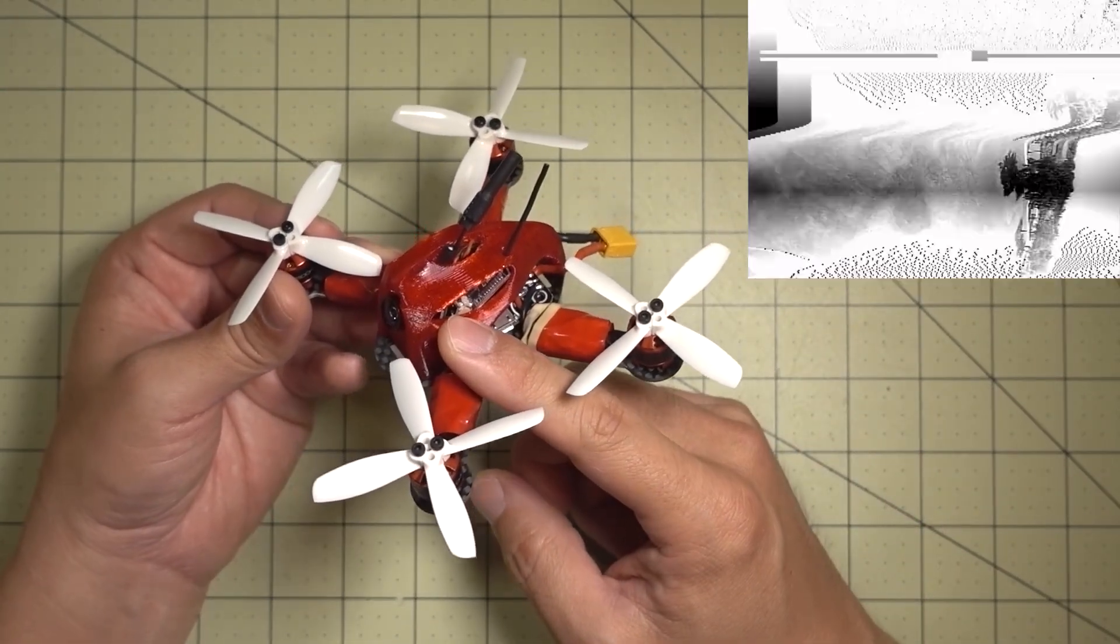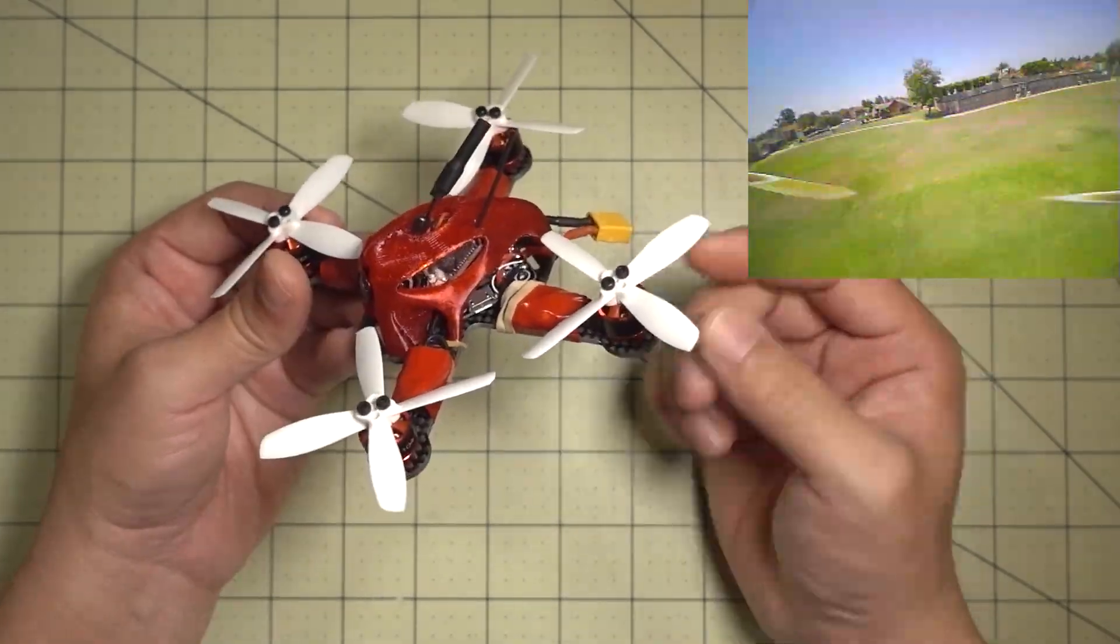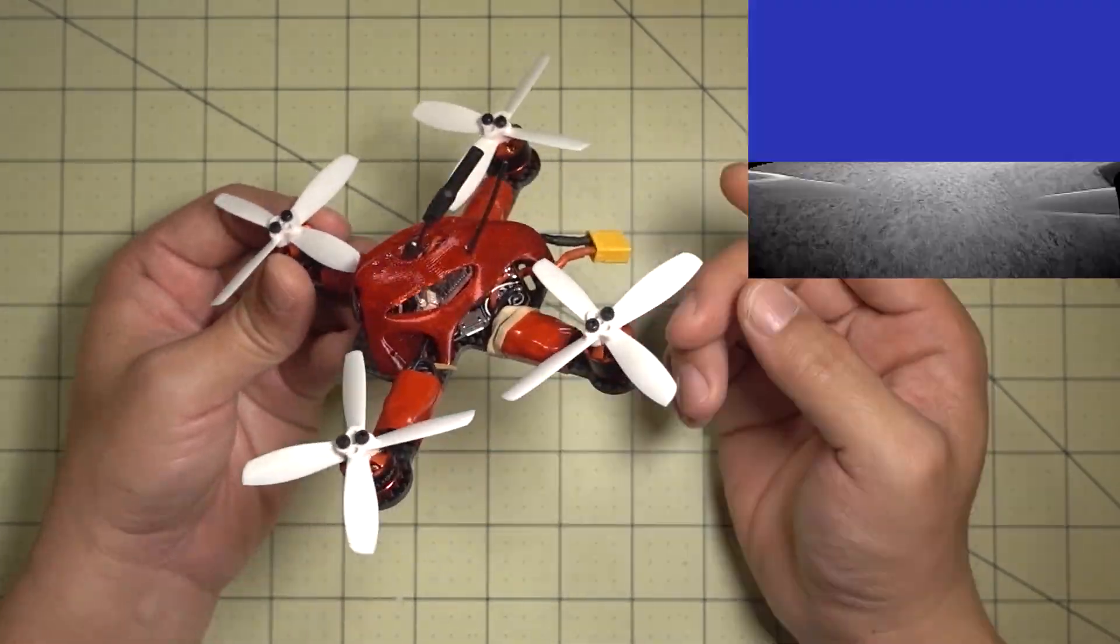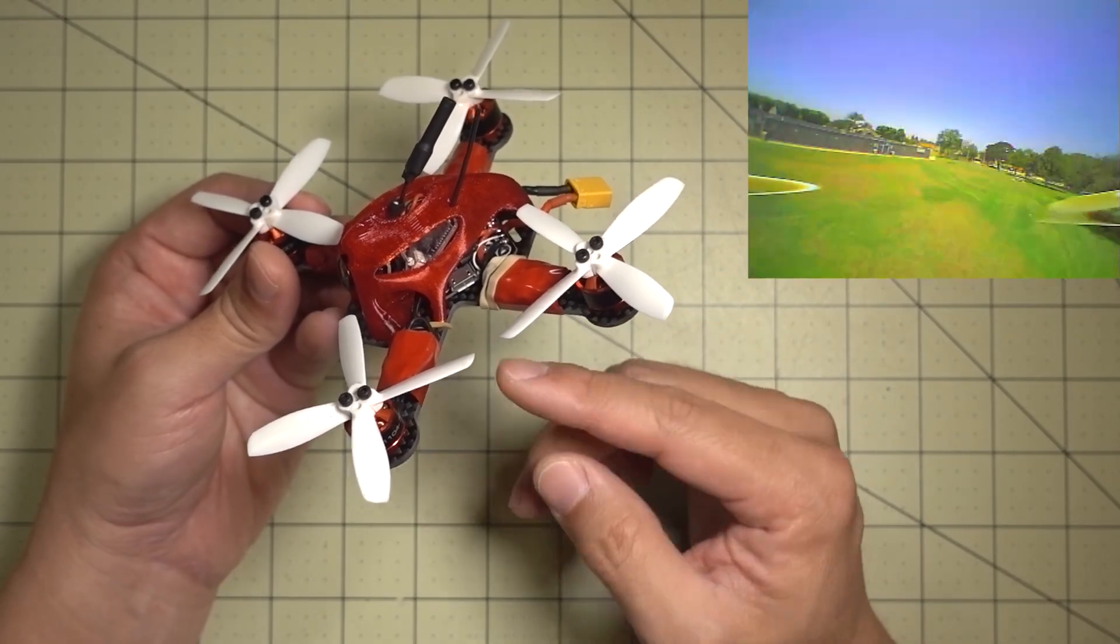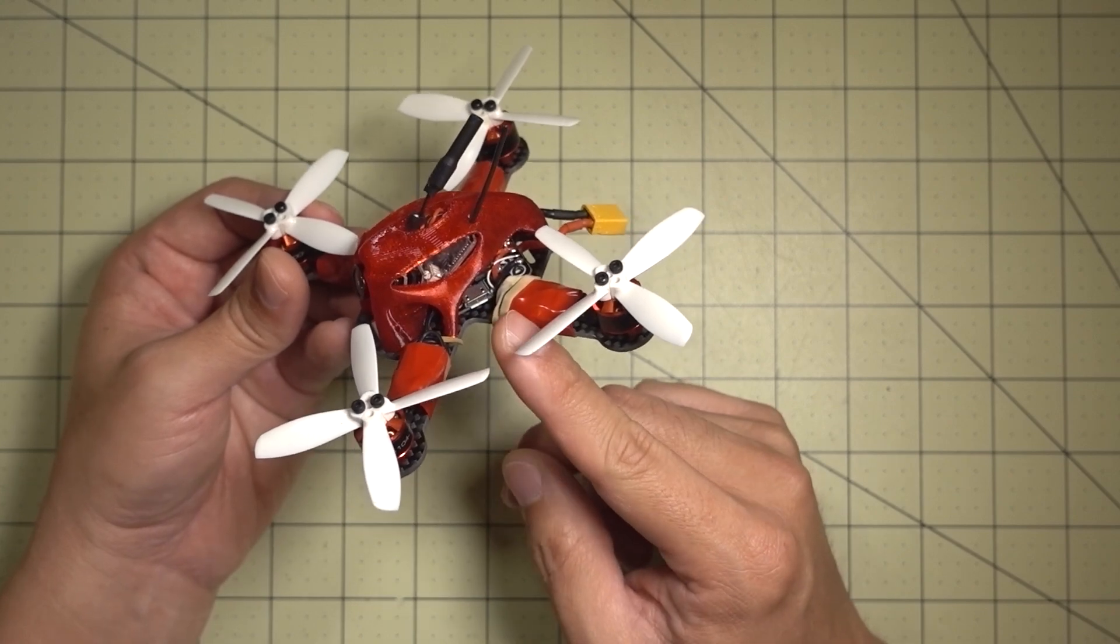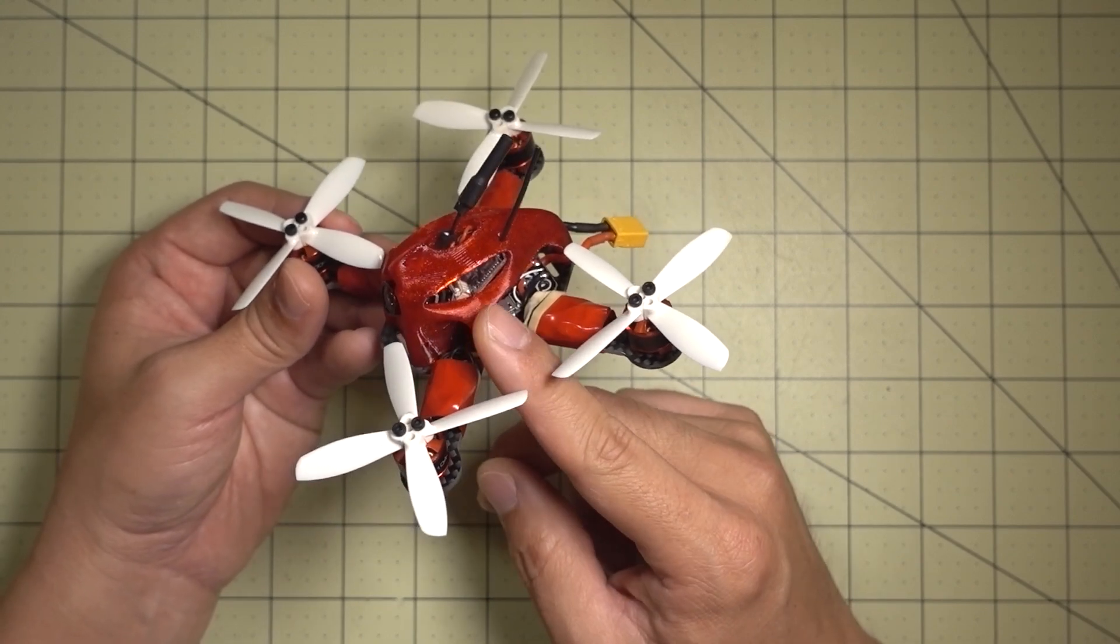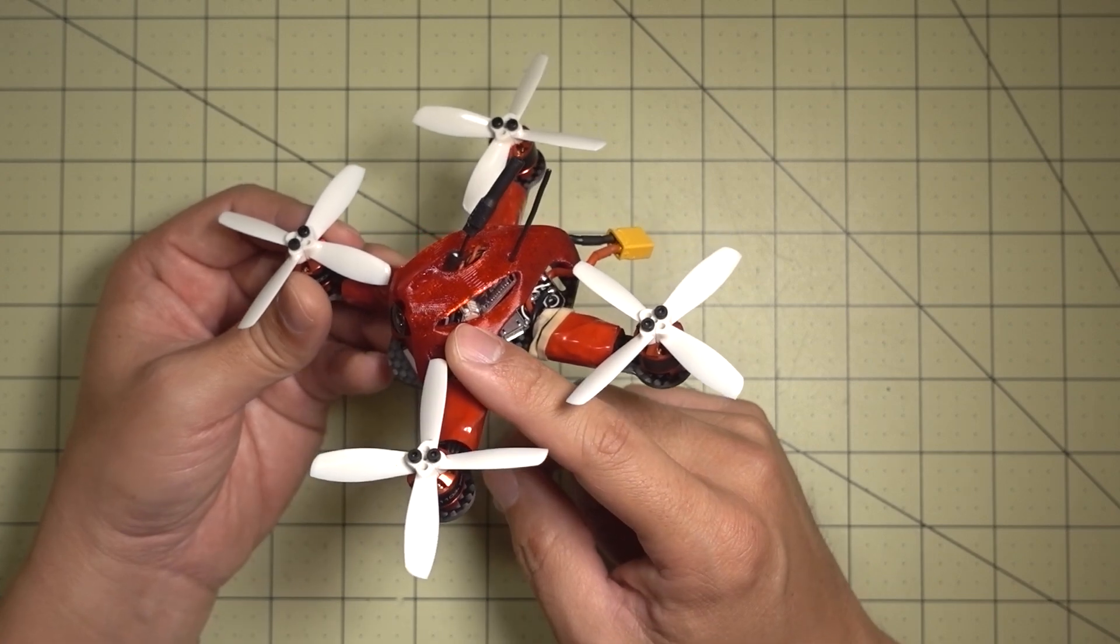Basically the video just cuts out when you do a punch out. What happens is power is being demanded by the motors, it comes from the battery and there's a voltage sag in the battery and the voltage regulator can't keep up with the voltage sag. It goes below 5 volts and then it can't supply enough current and voltage to your receiver or your camera.